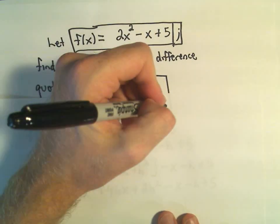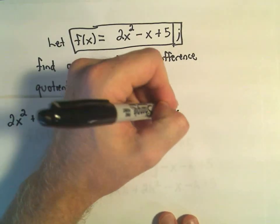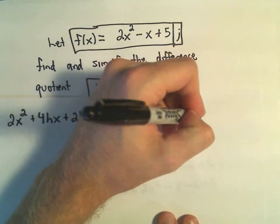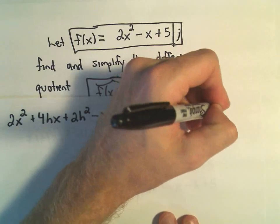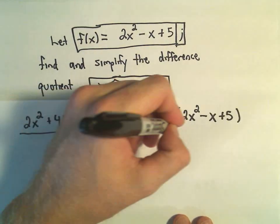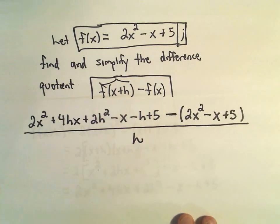So we'll get 2x squared plus 4hx plus 2h squared minus x minus h plus 5. And then it says you have to subtract away the original function f of x. Well, again, the original function f of x was 2x squared minus x plus 5. And again, it's all of that being divided by h.